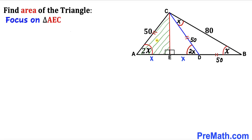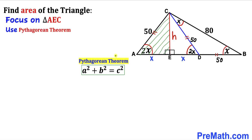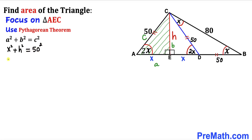Let's focus on right triangle AEC. Label CE as height H. Using the Pythagorean theorem, A squared plus B squared equals C squared: here A is x, B is H, and C is 50. So we get x squared plus H squared equals 2500. Call this equation number one.